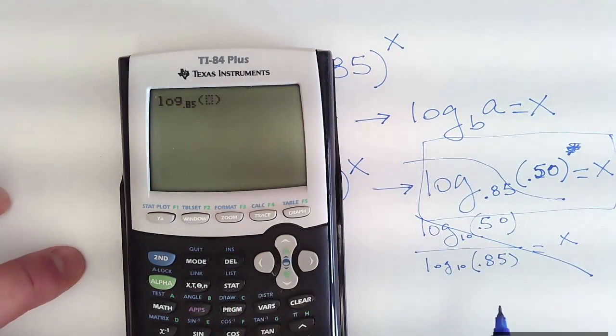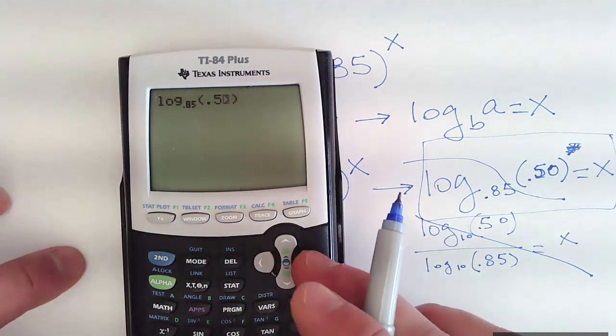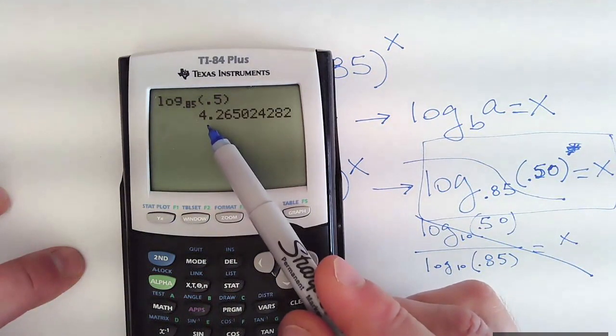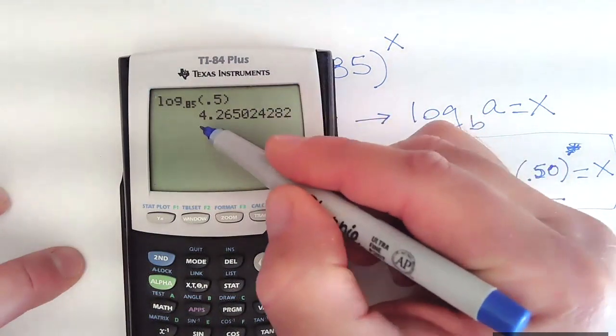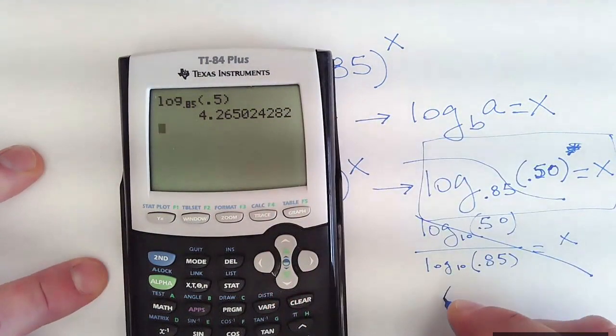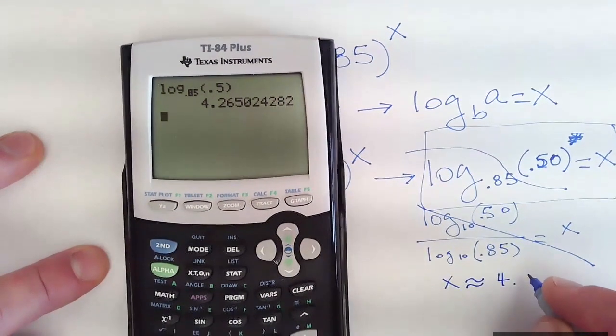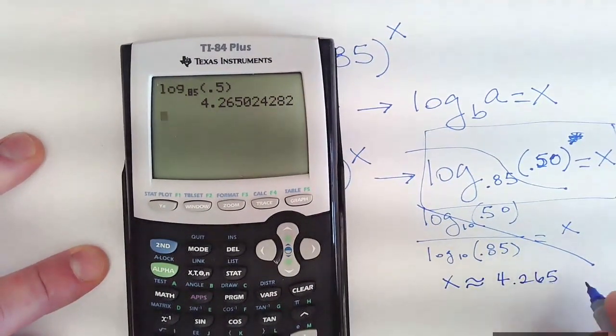Scroll over, enter half. Hit enter, and it tells me that approximately four and two hundred and sixty-five thousandths.